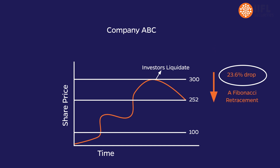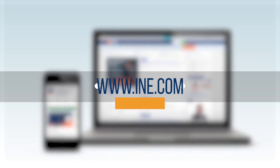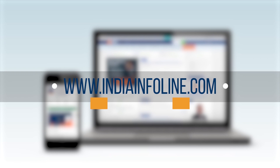If the share price of company ABC increases from Rs.100 to Rs.300, and then falls to Rs.252, then that is a fall of 23.6% — a Fibonacci Retracement. Visit www.IndiaInfoLine.com today.